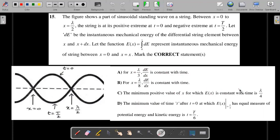First two options talk about the value of dE by dx being constant with time at what position. Option C talks about the minimum positive value of x for which the cumulative energy from zero to x remains constant with time, claiming it to be lambda by four.